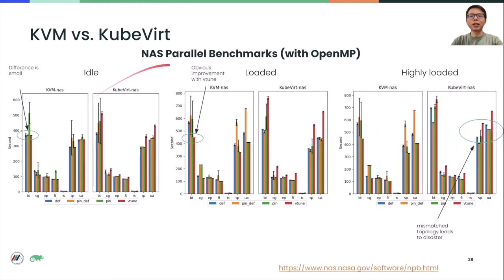The trend is pretty much the same in the NAS parallel benchmark, which provides a more quantitative measure of CPU performance by running different kinds of numerical computation kernels. The fully-tuned configuration still guarantees the best performance in KVM, and the default configuration manages well with the help of the host scheduler, though the difference is small when the host is idle. When we put load on the host, the improvement from tuning is more obvious. In the KubeVirt case, since the topology is mismatched and the vCPUs are pinned, the host scheduler does not even have the freedom to move vCPUs around, which leads to significant performance loss and inconsistent results.